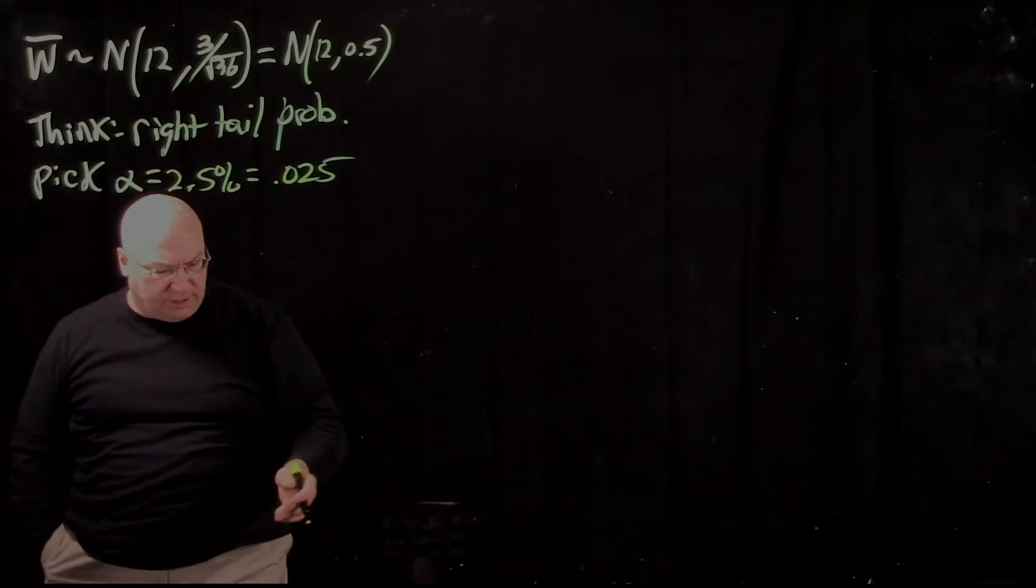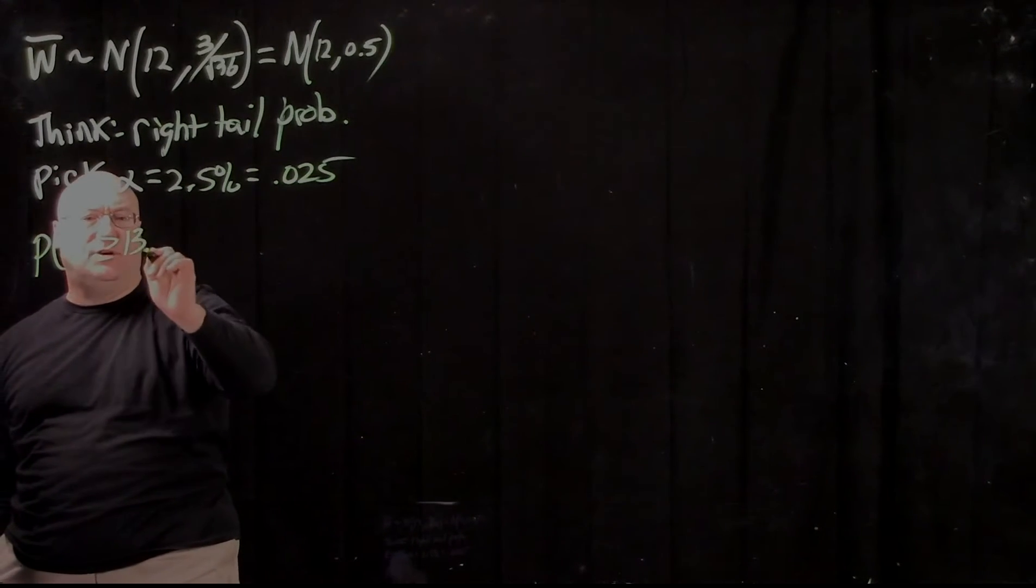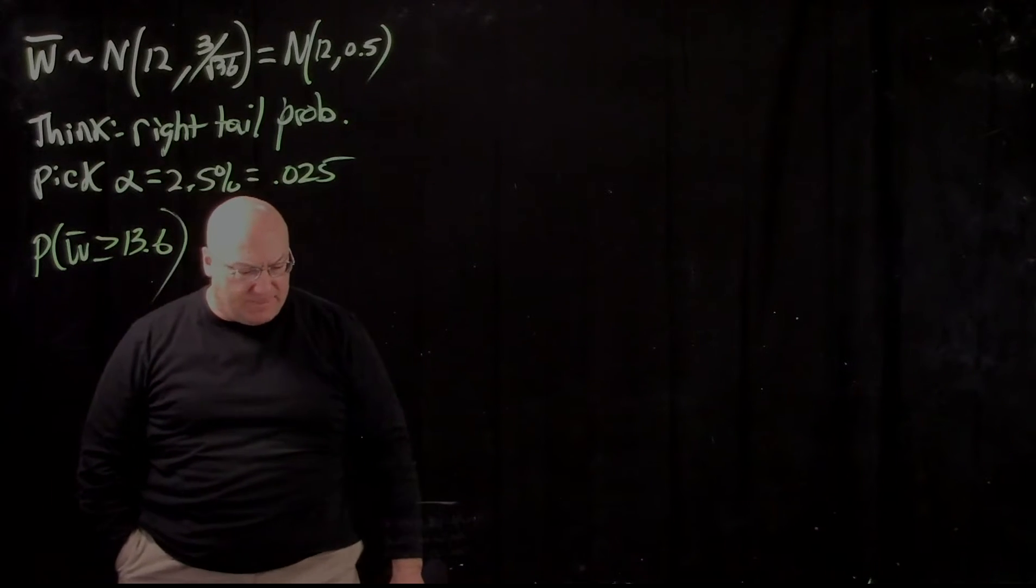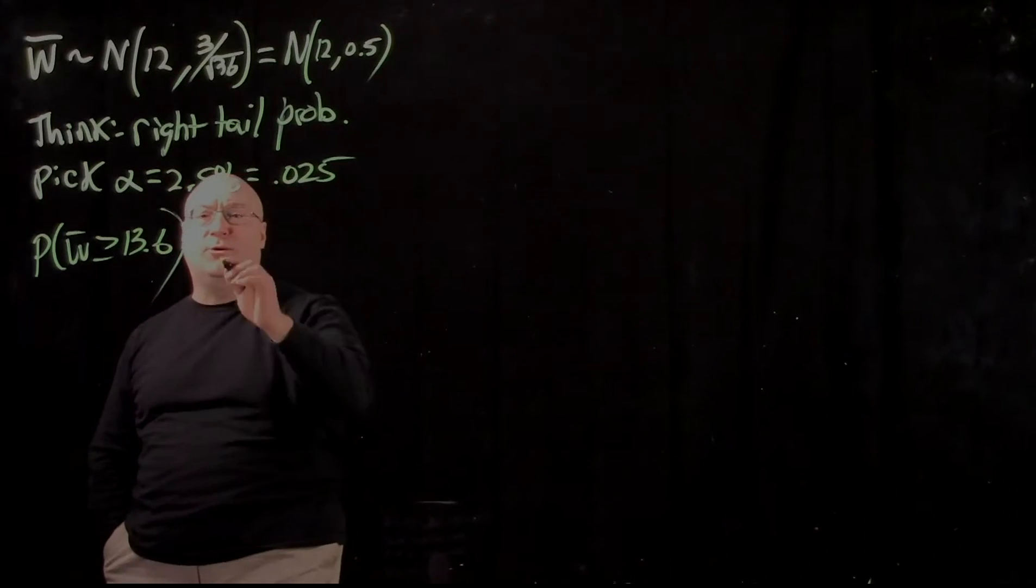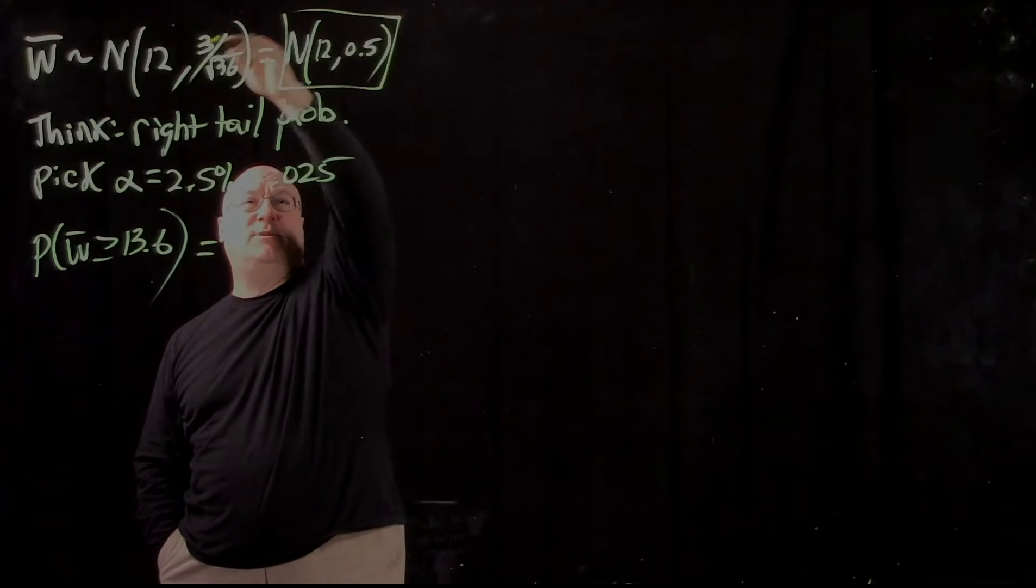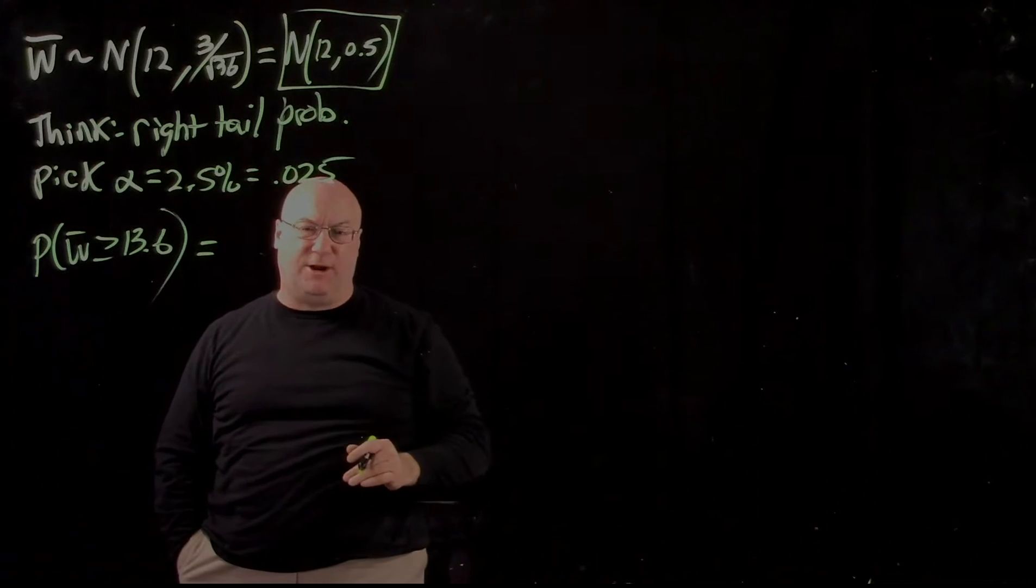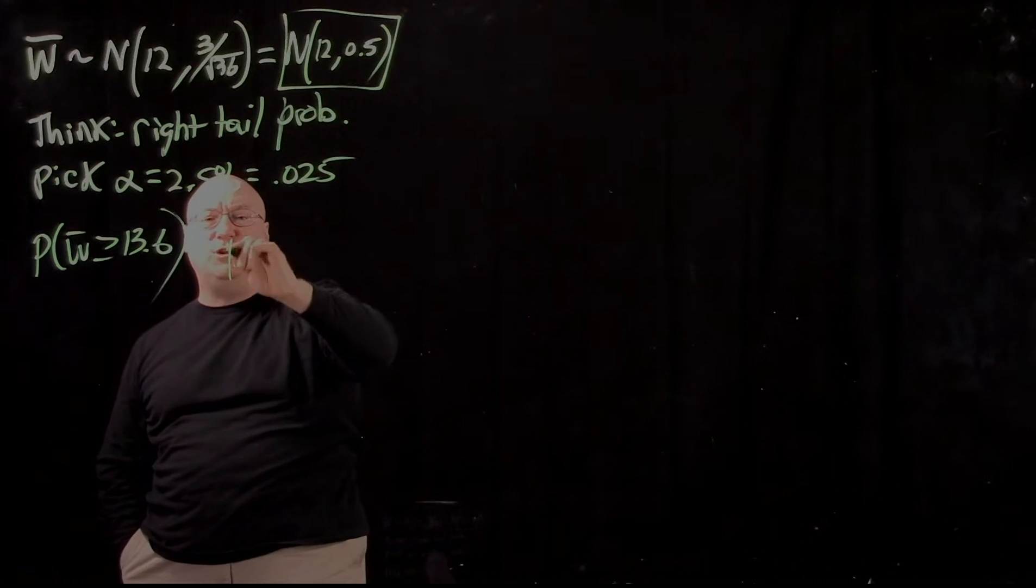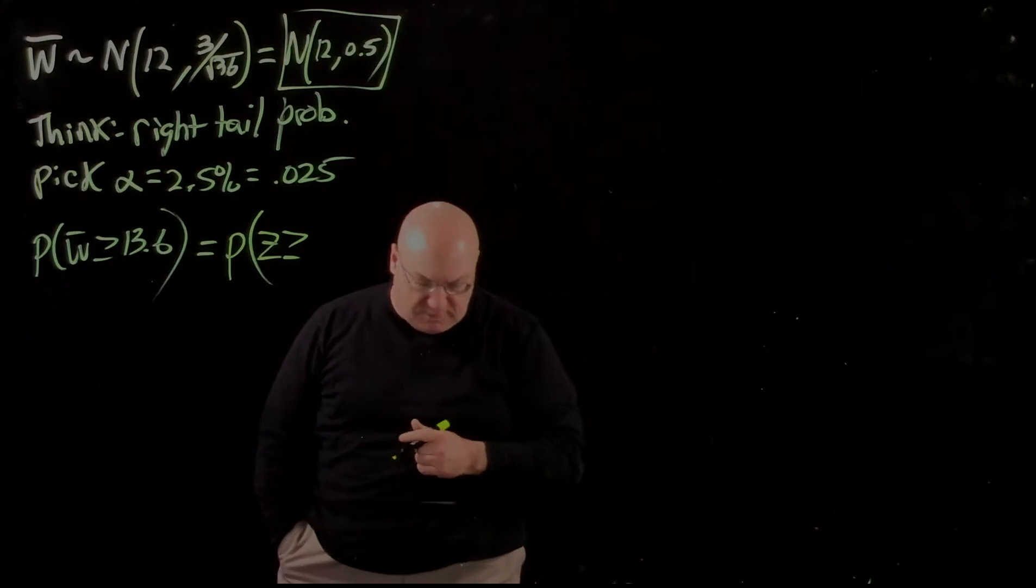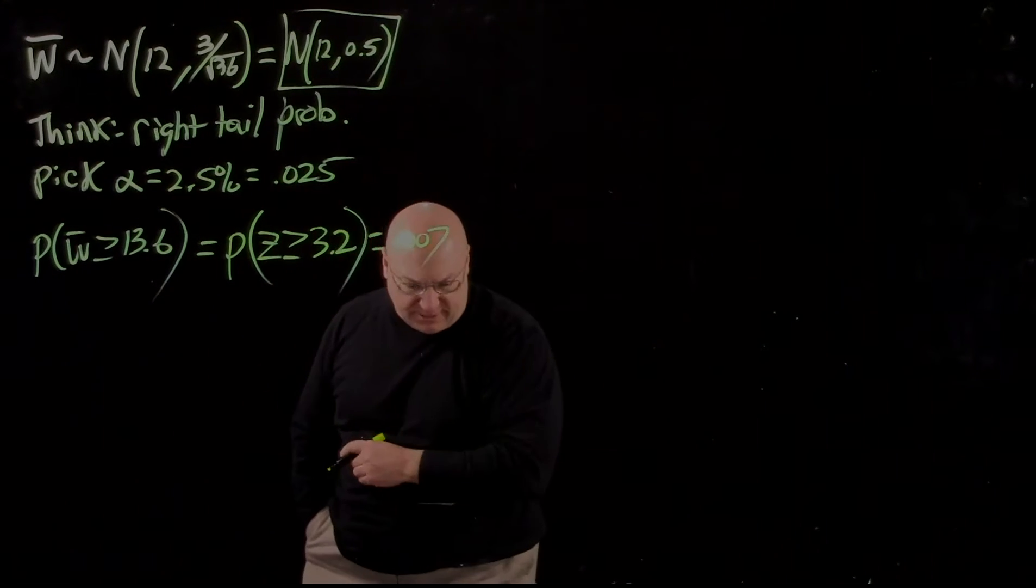Let's compute the tail probability. I want to compute the probability that W bar is bigger than or equal to 13.6. That's the tail probability associated with this value that I got. I will leave you to work this through. You should be able to figure this out. Convert to a Z score. What you'll end up with is probability that Z is greater than or equal to 3.2. And if you look that up, you should get 0.007.